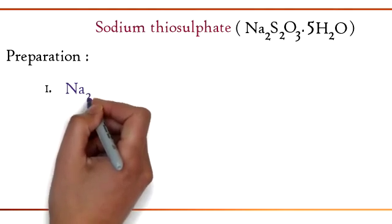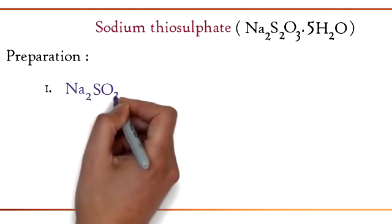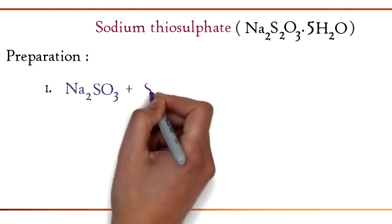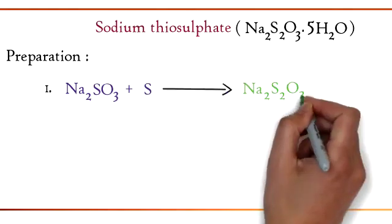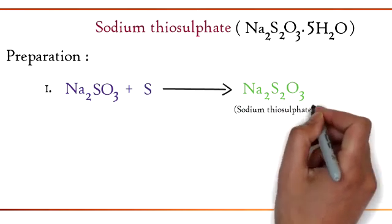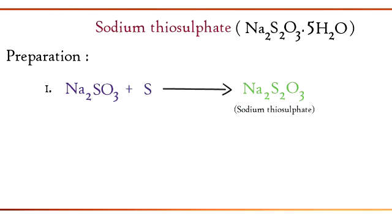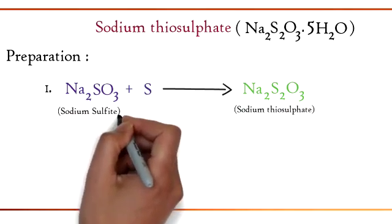The equation is Na2SO3 + S → Na2S2O3. Sodium thiosulfate is prepared by reacting sodium sulfite with sulfur.